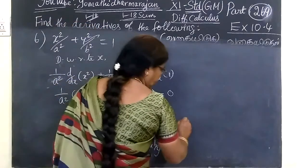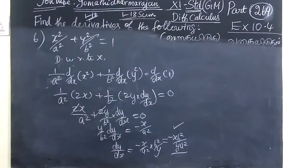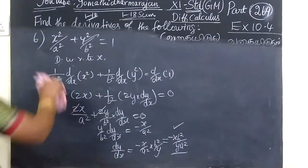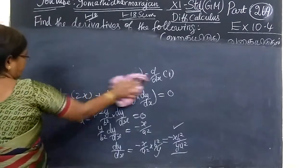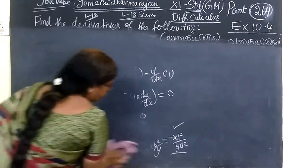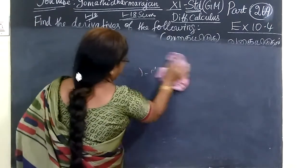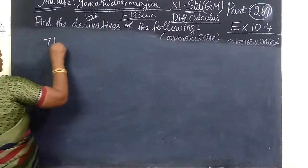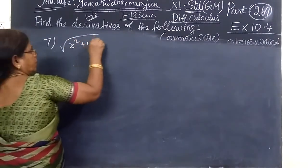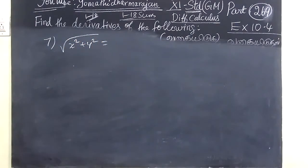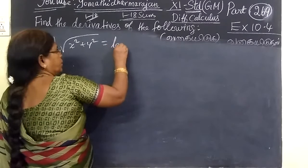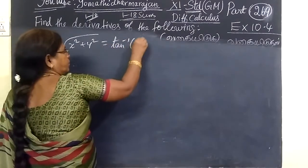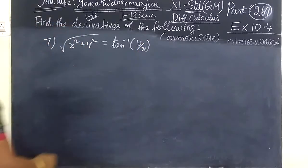So this one is the current one and we do one more time in this. So next one is question number 7: root of x square plus y square. x square plus y square equal to tan inverse y by x. So you are writing tan inverse y by x square.